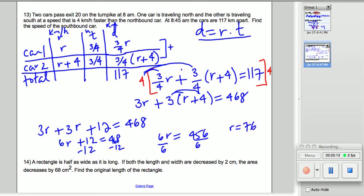Now, if we look at our chart, r stood for the rate of the first car, the car that was going northbound. In the question, they asked us for the speed of the car that's going southbound. So, that would be r plus 4. So, we have to add 4 to that, 4 to 76.